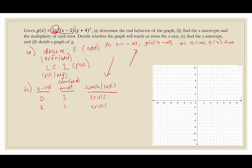Lastly, we take the factor x plus 4 and set it equal to 0. That gives x equals negative 4. Its multiplicity is 7, and because it's odd, it will also cross. So all three x-intercepts are crossing points. For the y-intercept, we plug in 0 for x. Since we have an x-intercept at 0, the y-intercept must be 0 as well — located at the origin, (0, 0).